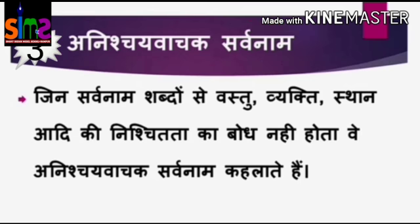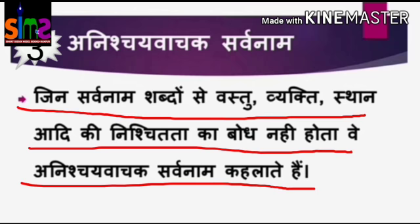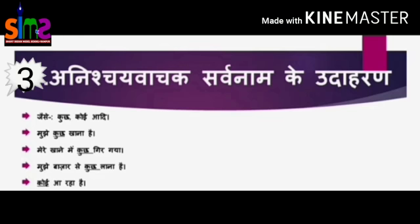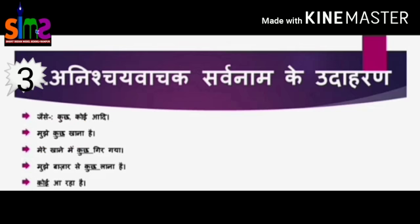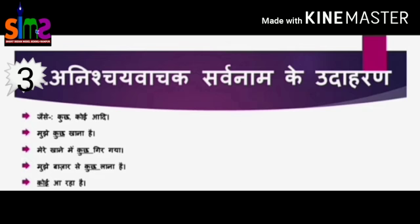अनिश्चय वाचक सर्वनाम की परिभाषा इस प्रकार है — जिन सर्वनाम शब्दों से वस्तु, व्यक्ति, स्थान आदि की निश्चितता का बोध नहीं होता, वे अनिश्चय वाचक सर्वनाम कहलाते हैं। इसमें पक्की बात नहीं होती। इसके लिए कुछ और कोई शब्दों का प्रयोग किया जाता है। उदाहरण: मुझे कुछ खाना है — यहाँ कुछ से समझ नहीं आ रहा कि क्या खाना है। मेरे खाने में कुछ गिर गया है — यह भी अनिश्चय वाचक सर्वनाम का उदाहरण है।